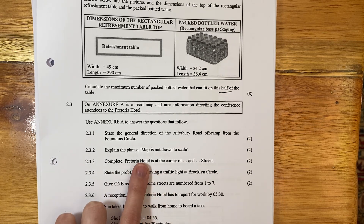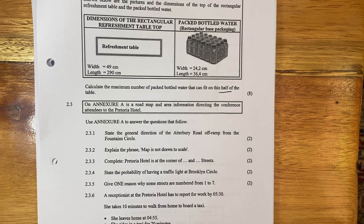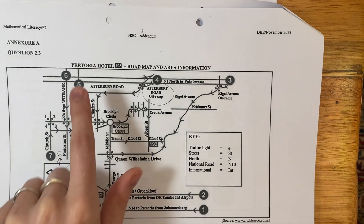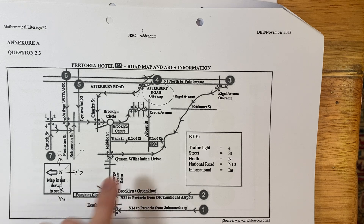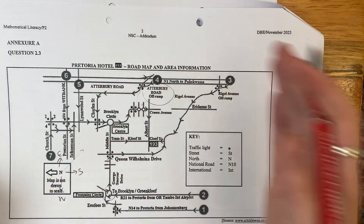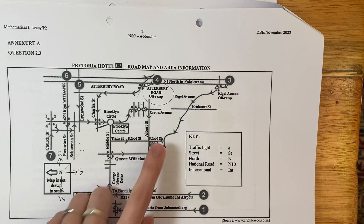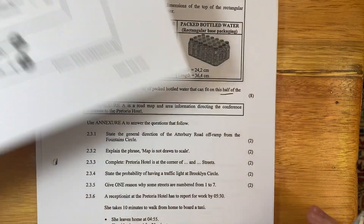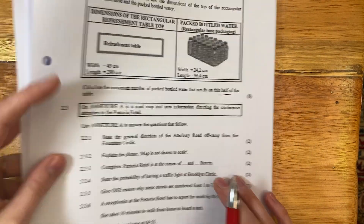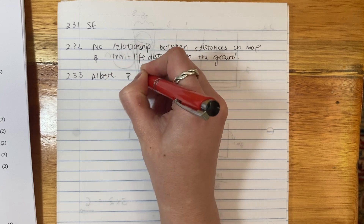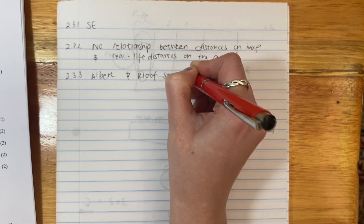Complete this sentence: Pretoria Hotel is at the corner of something and something street. This was a bit tricky because I couldn't find Pretoria Hotel at first. But up here it says Pretoria Hotel 193, so we just need to find 193. What it wants you to do is use the complete set of information you have — make sure you also read the titles and use your key in answering your questions. So it's at the corner of Albert and Cluath Street.